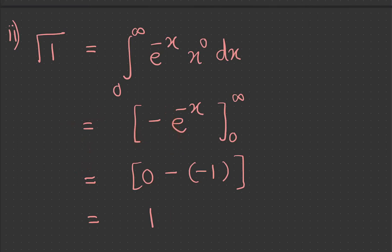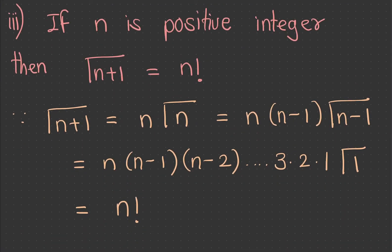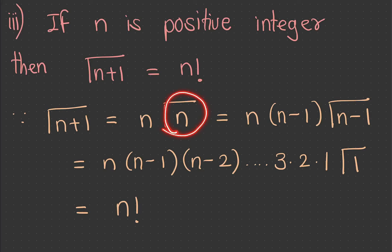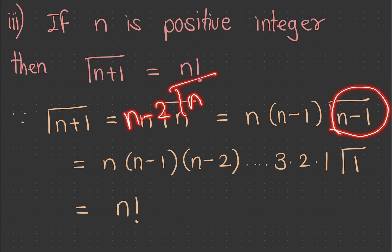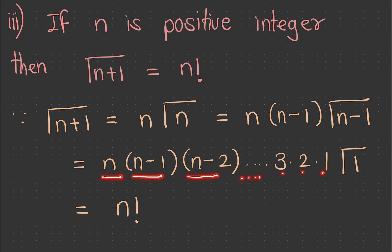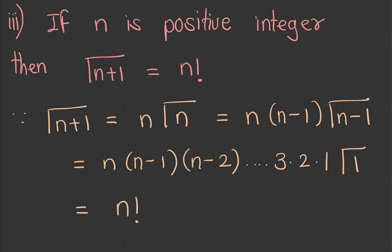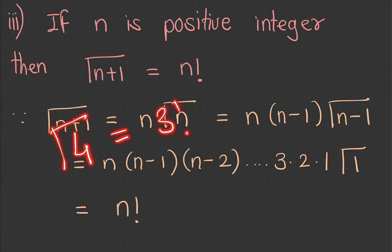The third property: if n is a positive integer, then gamma of n plus 1 equals n factorial. Using the recurrence, gamma of n plus 1 equals n into gamma n equals n into n minus 1 into gamma of n minus 1 equals n into n minus 1 into n minus 2, continuing down to 3 into 2 into 1 into gamma 1. Since gamma 1 equals 1, we get n factorial. For example, gamma of 4 equals 3 factorial equals 6.